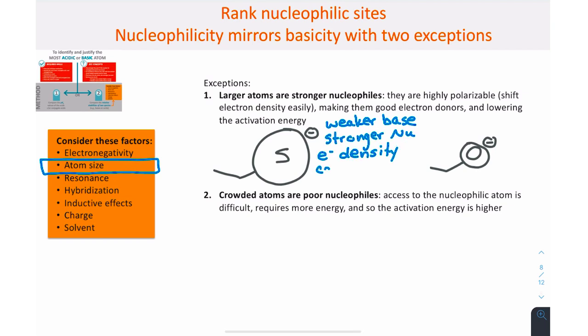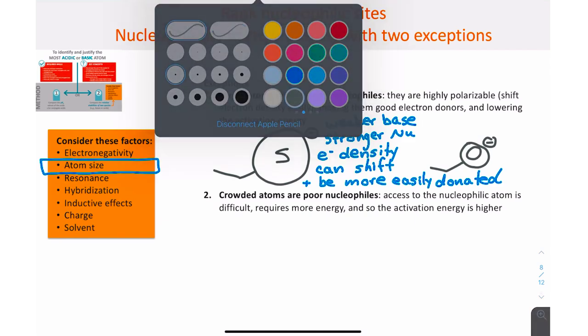However, sulfides are stronger nucleophiles. The larger sulfur atom is more polarizable, meaning its electron density shifts more easily, making it a better electron donor, and lowering its activation energy for its reaction with an electrophile.